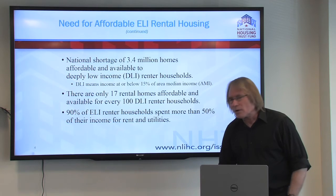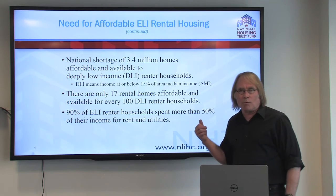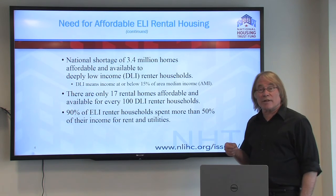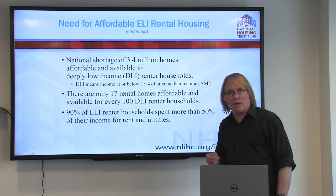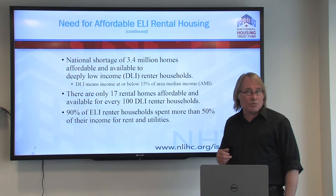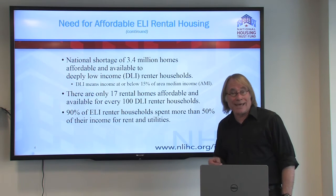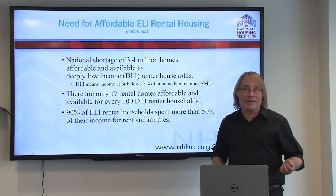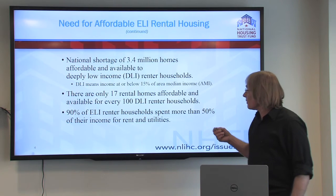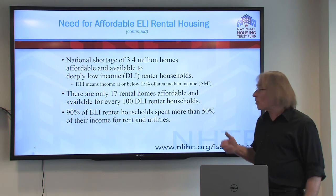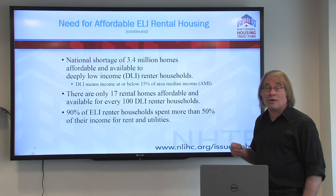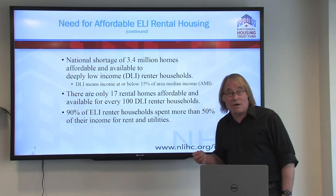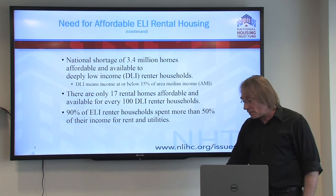75% of these households are spending more than 50% of their income for rent and utilities — they are severely cost burdened. The problem becomes even greater because out of that 7.1 million, there is a national shortage of 3.4 million homes affordable and available to what we call deeply low-income households — those with incomes below 15% of the area median income. DLI is a term the National Low-Income Housing Coalition has made up; it's not an official HUD term. ELI is an official HUD term. There are only 17 rental homes affordable and available for every 100 DLI renter households, and 90% of these households are spending more than 50% of their income for rent and utilities.